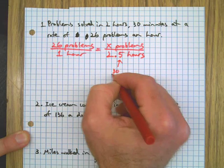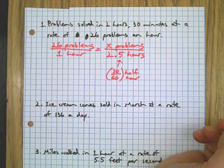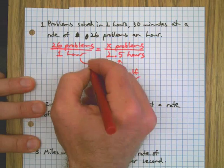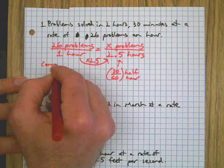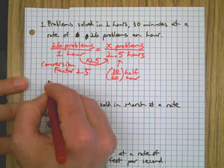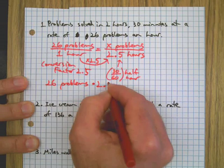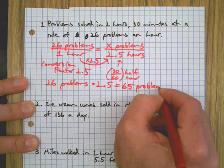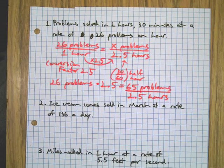We could do 30 minutes out of 60 minutes to get that half an hour, right? So we have a conversion factor of 2.5 here because I can see that to get from one hour to two and a half hours, I'm going to multiply by 2.5. So all I need to do to solve this, conversion factor 2.5. So I'm going to go 26 problems times my conversion factor of two and a half, and that equals 65 problems in two and a half hours. Done deal.